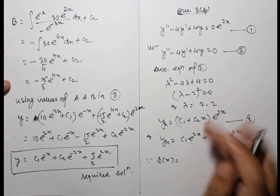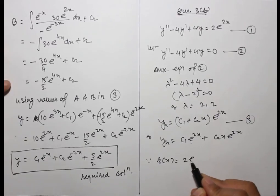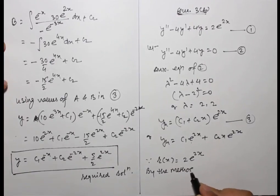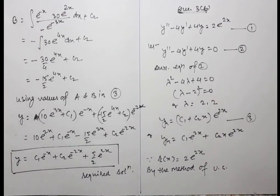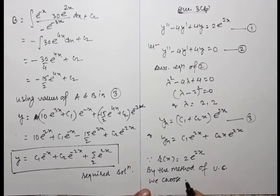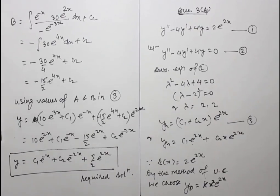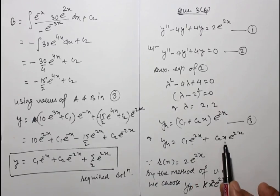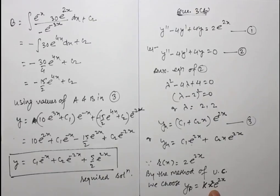Since the right-hand side r(x) = 2e^(2x), by the method of undetermined coefficients we initially choose y_p = k·e^(2x). However, y_p must be independent of the allied solutions e^(2x) and x·e^(2x), so we instead construct y_p = k·x²·e^(2x).